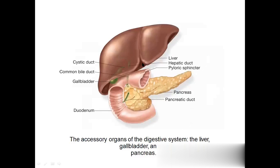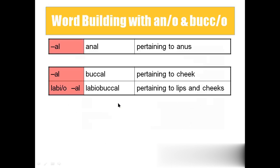The hepatic duct and cystic duct combine to form the common bile duct. The common bile duct and the pancreatic duct combine to form the hepatopancreatic duct, which opens into the duodenum.